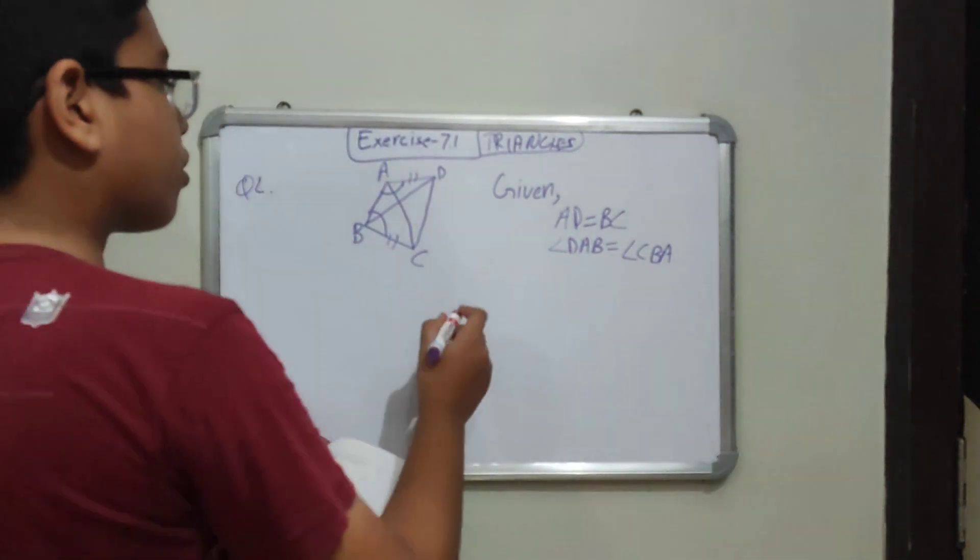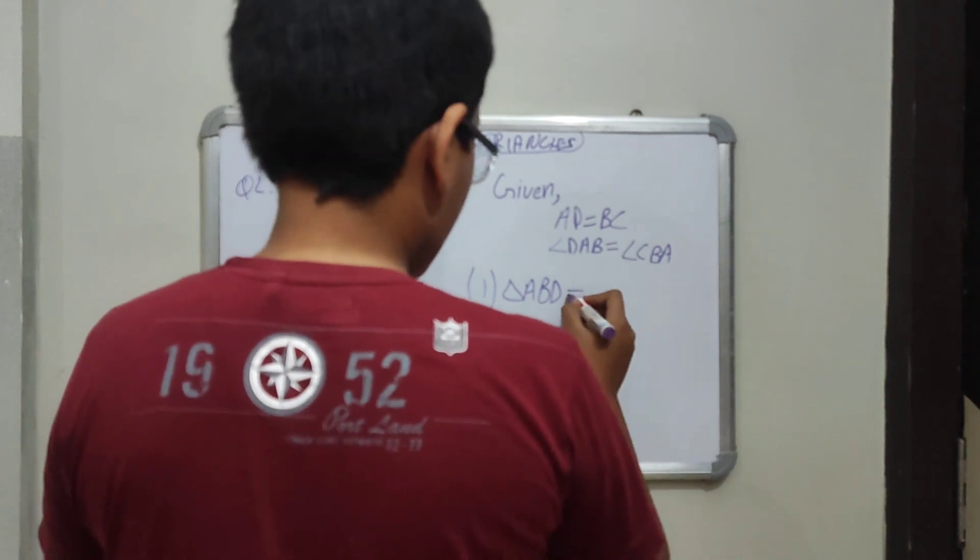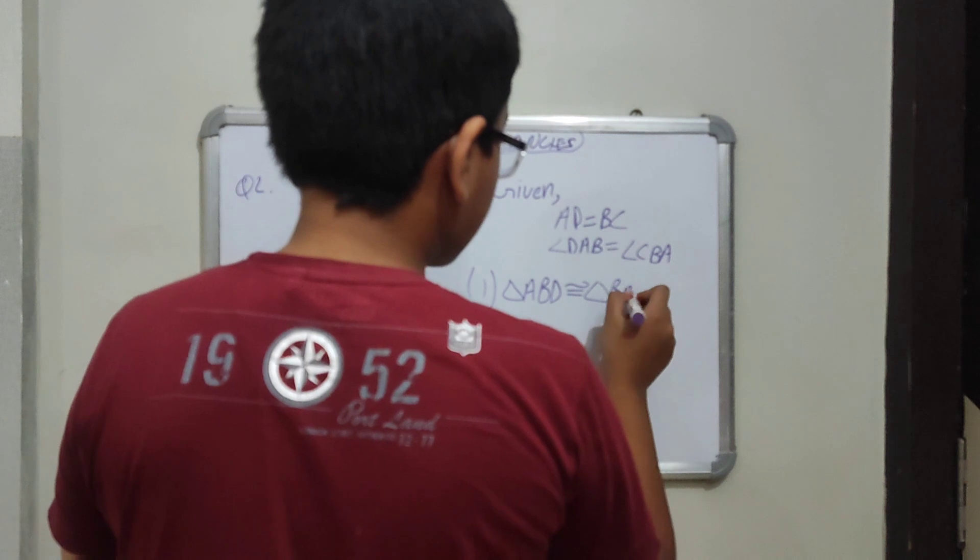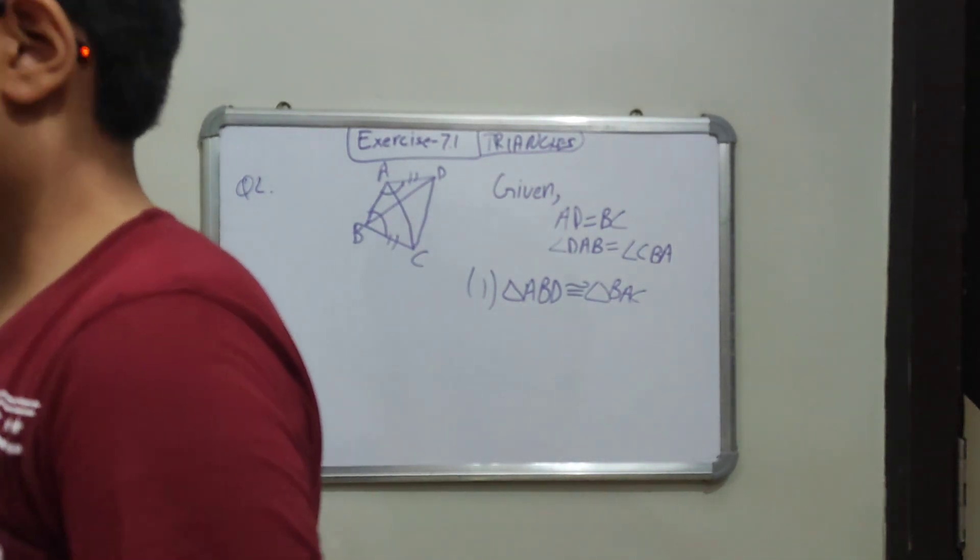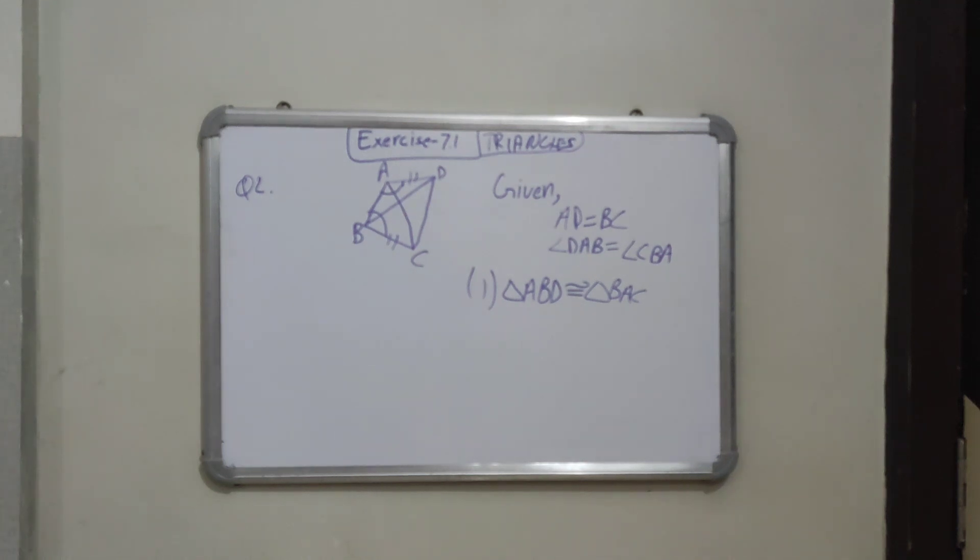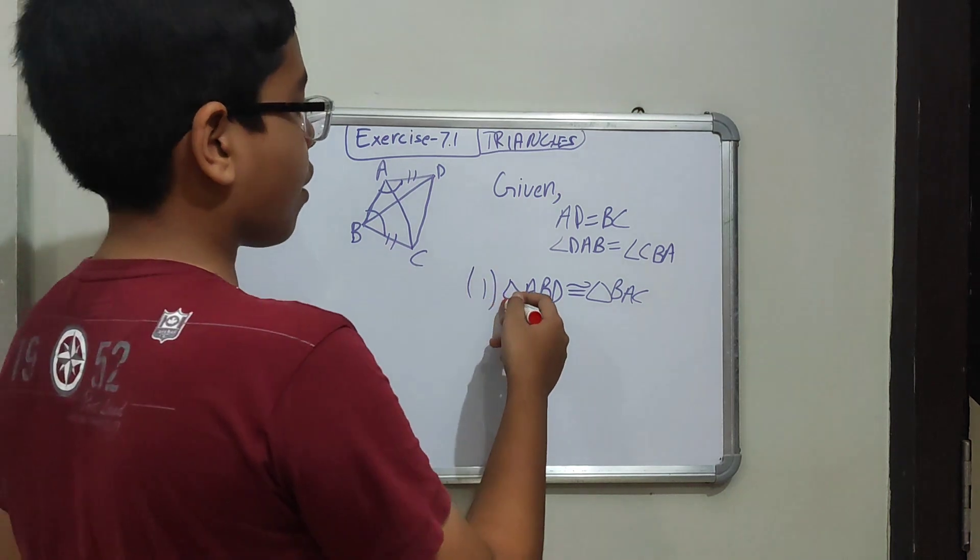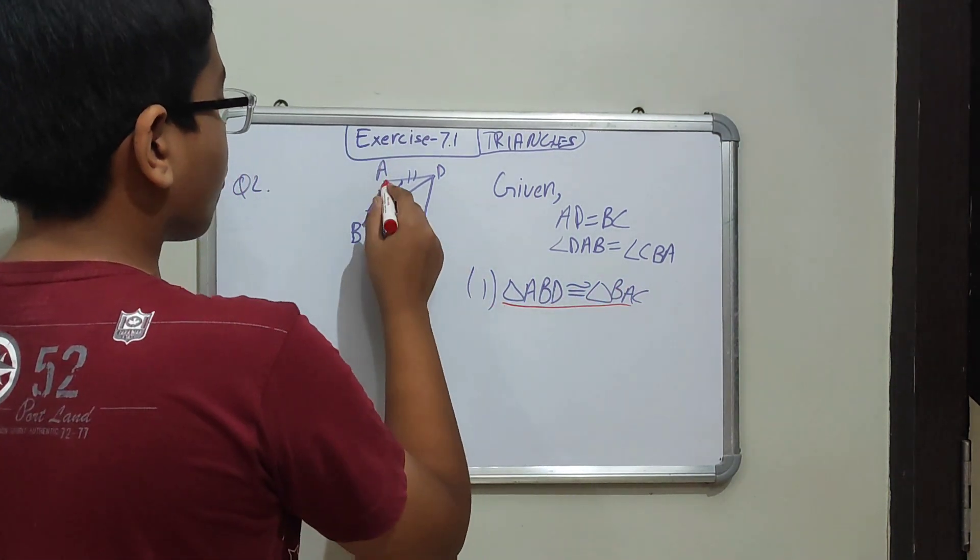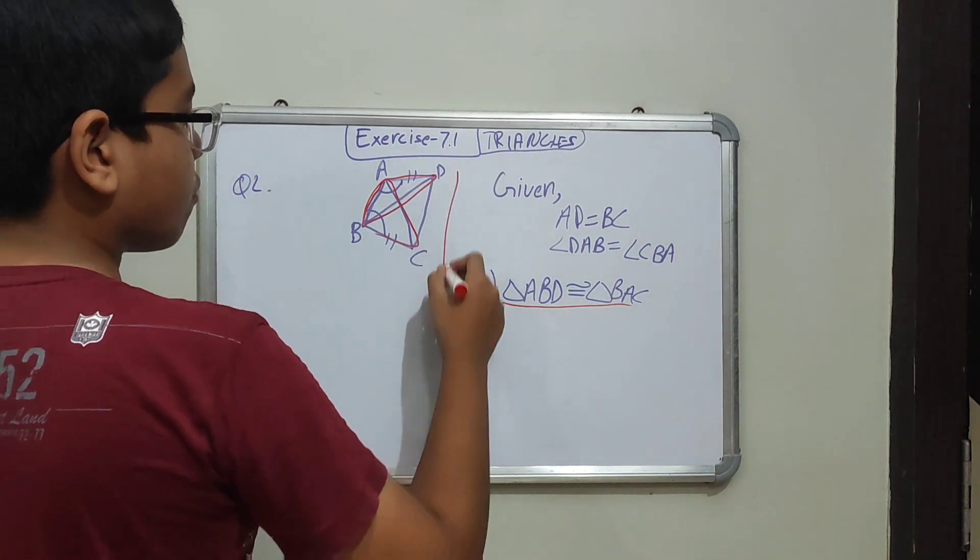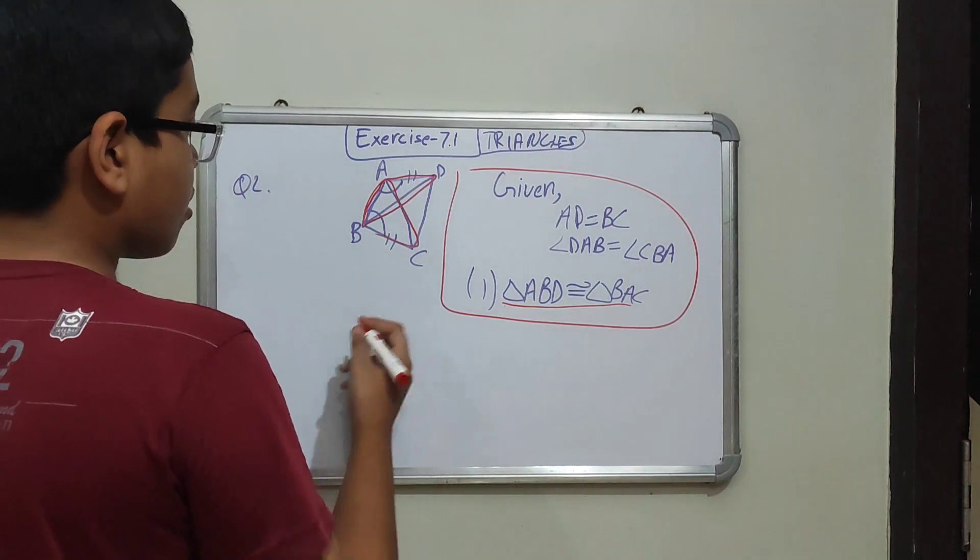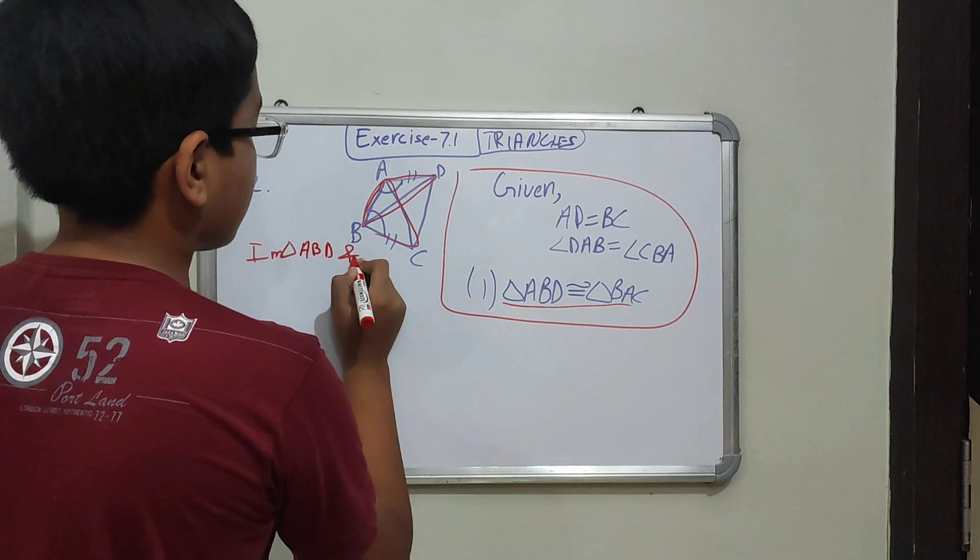Now the question, we are given to prove that triangle ABD is congruent to triangle BAC. So first of all let's solve the first part of this question, then we'll move to the different parts. Let me get a different shade of marker so that you can see the answer properly. We have been told to prove ABD and BAC. To prove that we are going to do deductive reasoning. In triangle ABD and triangle BAC...